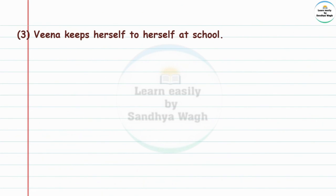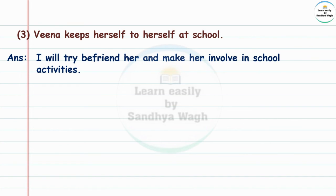Situation: Vina keeps herself to herself at school — shaye madhe ekti rahate. What would you do? Answer: I will try to befriend her and make her involved in school activities.